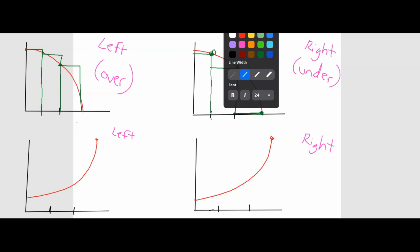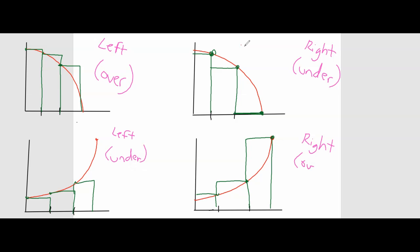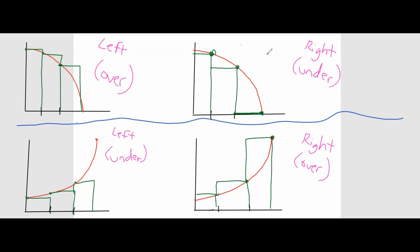Let's look at the bottom two functions. We're going to do our left one first, and we'll do our right. Is the left an over or an under-approximation? Well, that is an under. And on the right, that is clearly an over. So what was the difference between the function on top versus the function on the bottom? Why did we get the left Riemann sum being an over-approximation for the top function versus an under-approximation for the bottom?